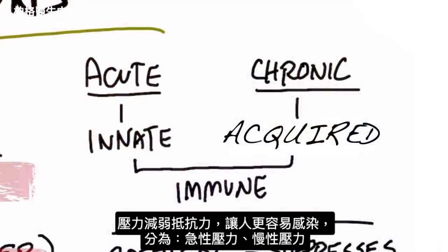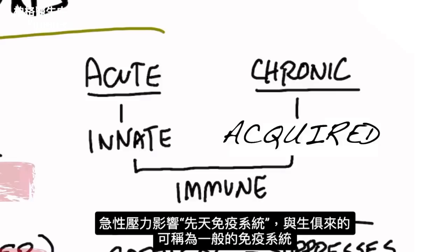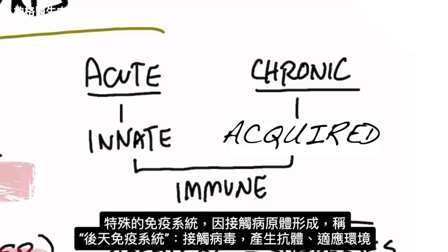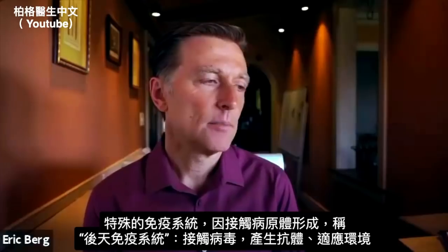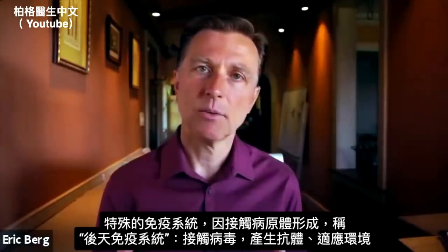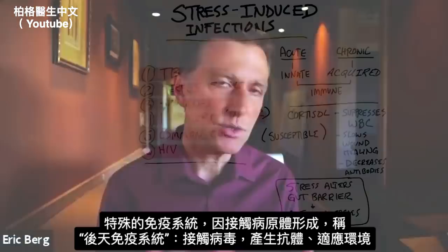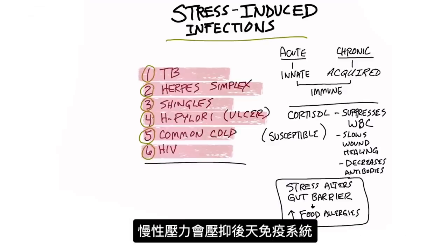You have acute stress and chronic stress. Acute stress affects the innate part of the immune system — that's the immune system you're born with, which is more of a general immune system. Then you have a more specific immune system that targets certain pathogens, called the acquired immune system, which you develop by being exposed and developing antibodies. Chronic stress suppresses the acquired immune system more than anything.